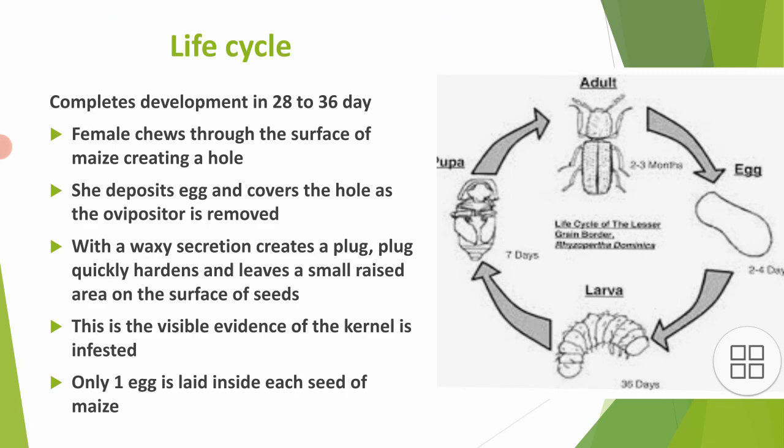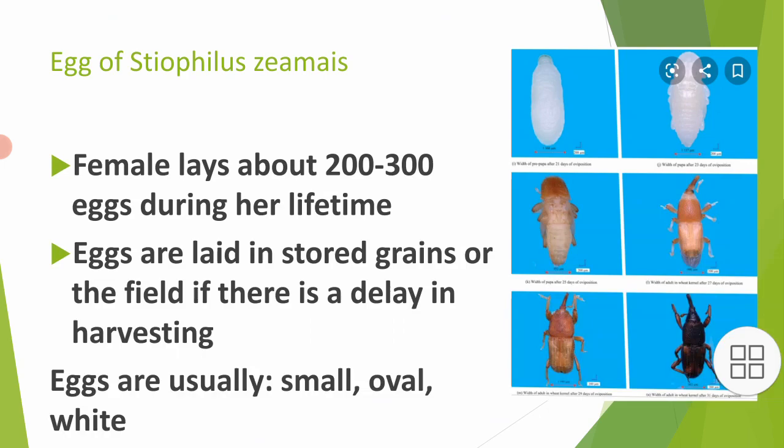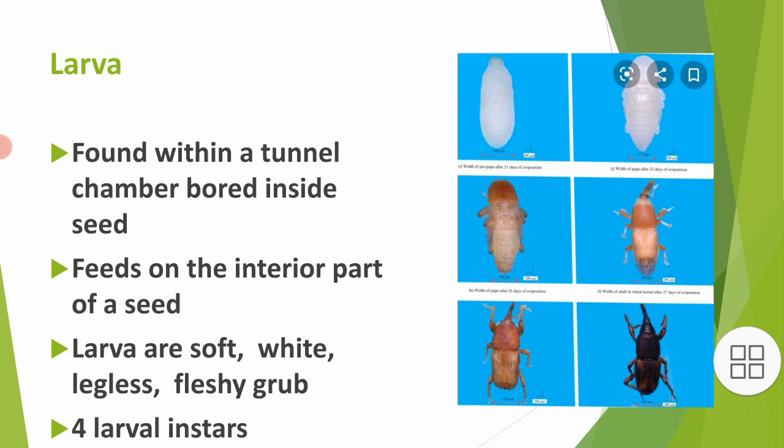Through that single egg, one larva emerges, which then pupates and an adult emerges. A female lays about 200 to 300 eggs during her lifetime. Eggs are laid in stored grains or in the field if there is a delay in harvesting — they don't wait for the storage house. Eggs are usually small, oval, and white in color.